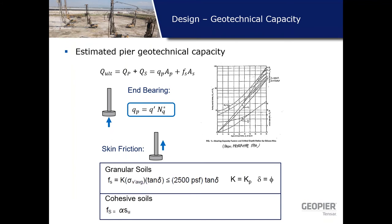Now that we know the rigid inclusion is taking all the load because it's so much stiffer than the surrounding soils, we have to resolve that load through statics — through skin friction and end bearing, nothing magic. The capacity of our rigid inclusions equals the tip resistance plus the skin friction. We can calculate end bearing using the overburden stress times a factor from a table, and for skin friction in granular material we use a passive earth pressure coefficient times the vertical effective stress times the tan of the friction angle between the concrete and the soil.